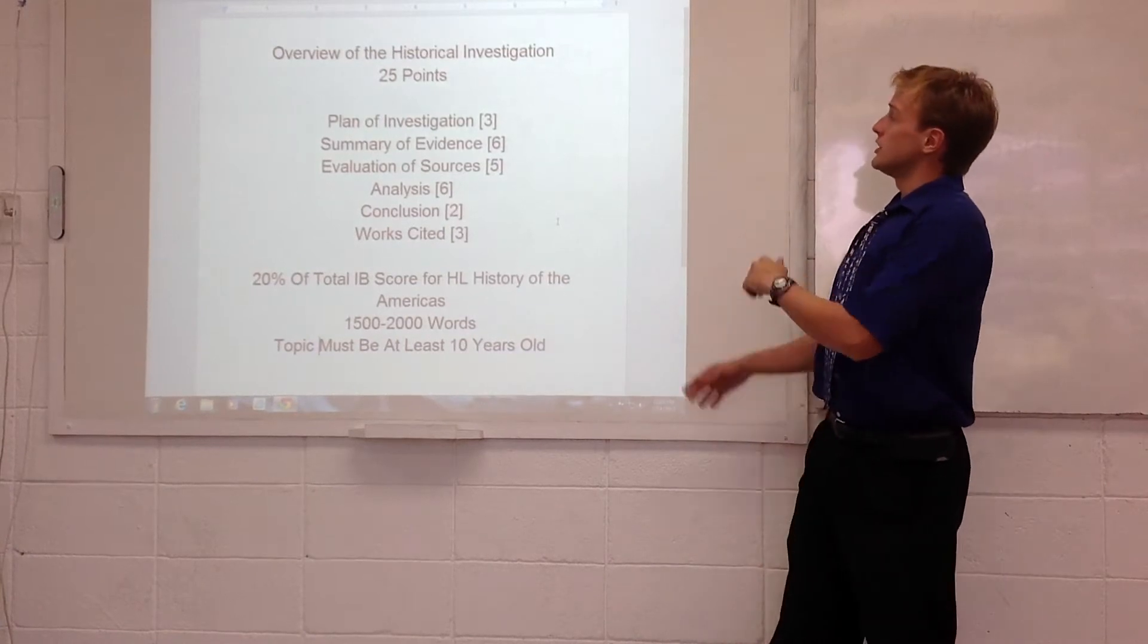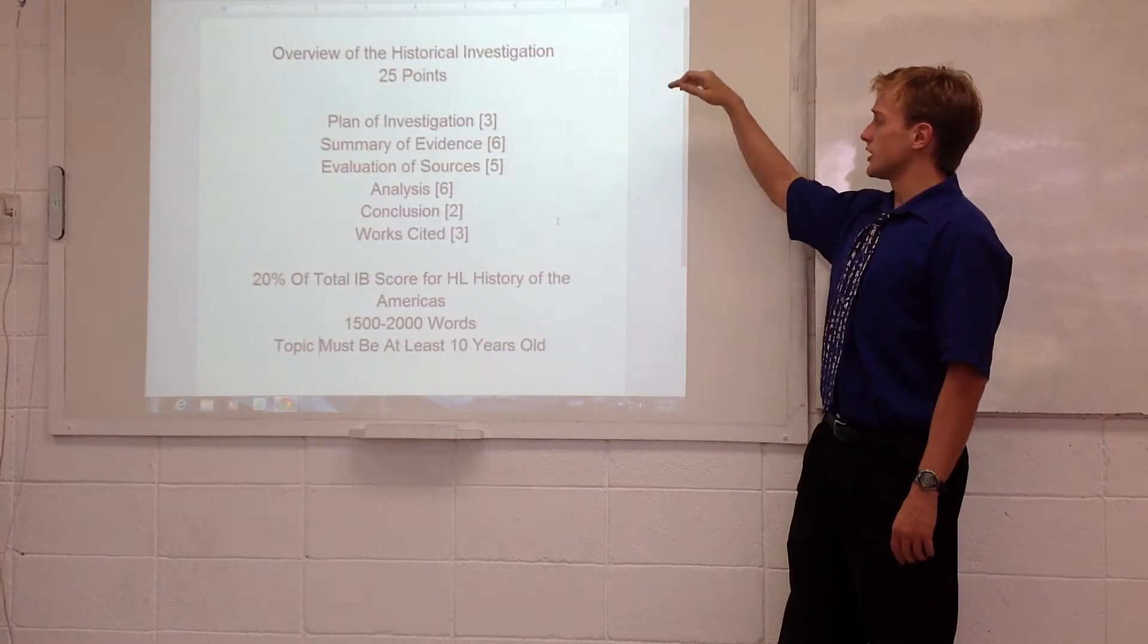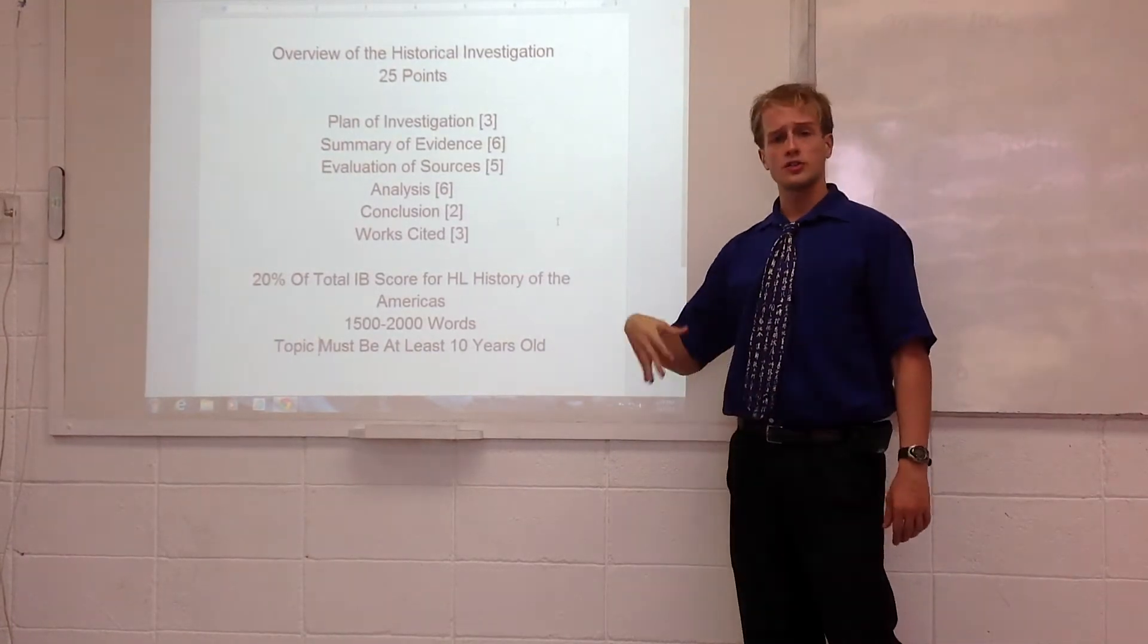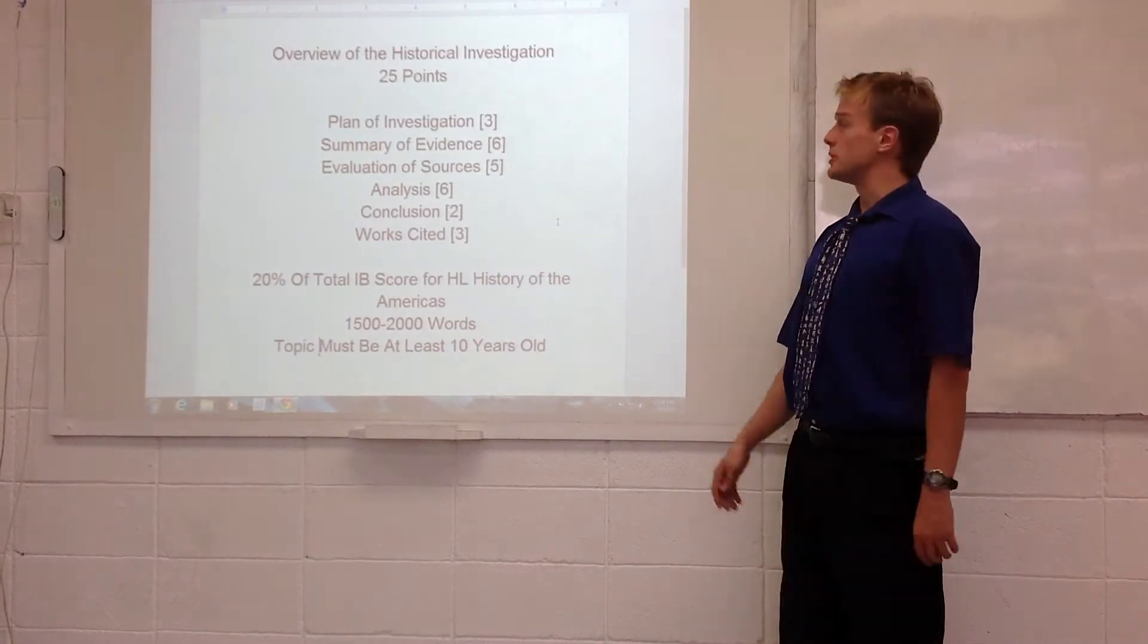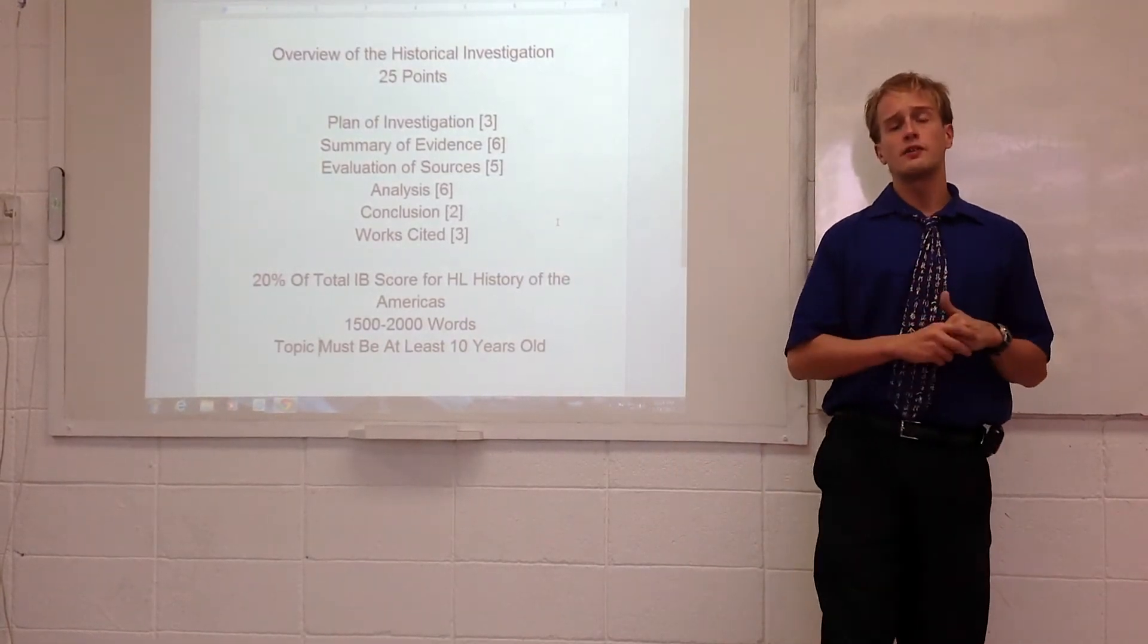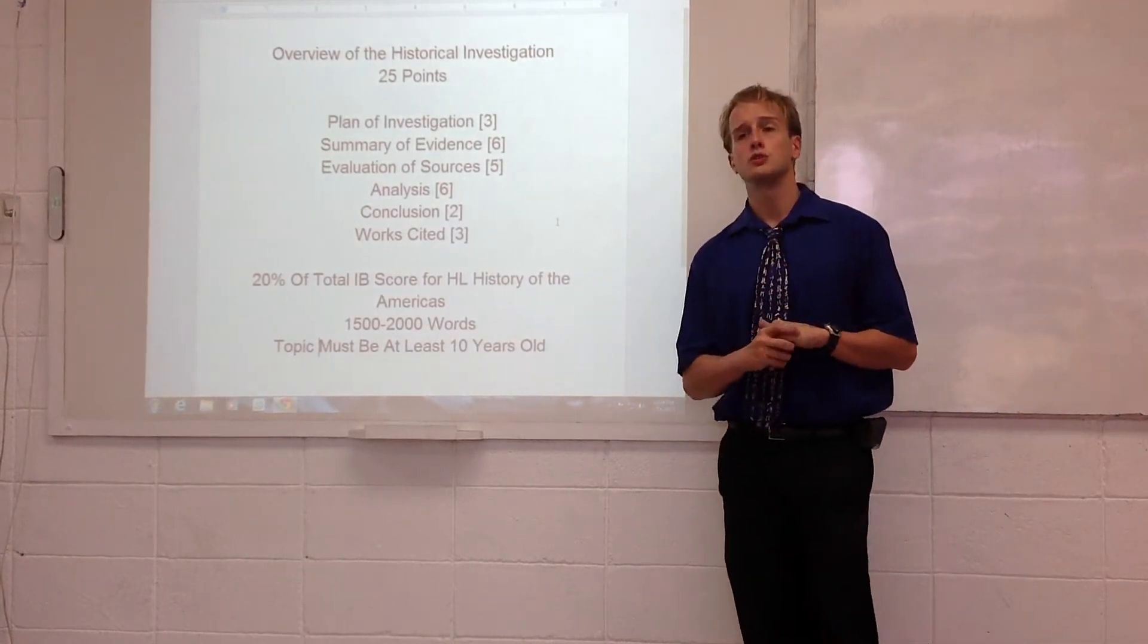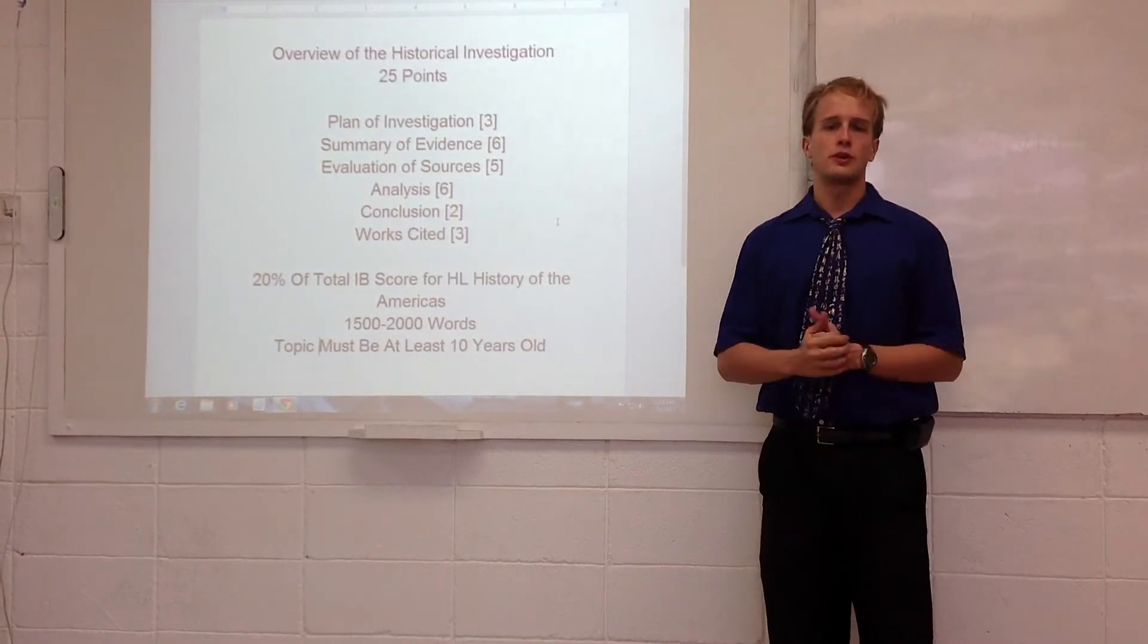So, as we can see, it's 25 points. It's worth 25 raw points, and it's got six different components that constitute those 25 points. The plan of investigation for three points, the summary of evidence for six, the evaluation of sources for five, the analysis for six, the conclusion for two, and the work cited for three, adding up to 25.